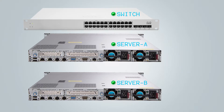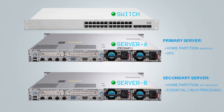At any given time, only one server can be the primary server. The primary server has a home partition mounted on it and ideally all VPSs started and running. The home partition contains all Bicom system services including Serverware, PBXware, other VPSs, and all VPS configuration settings. While in secondary state, the server does not have the home partition mounted and only has essential Linux processes running.